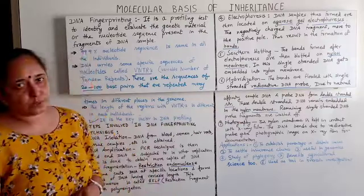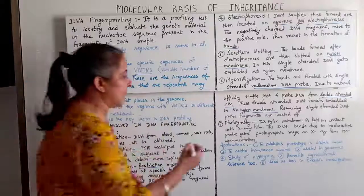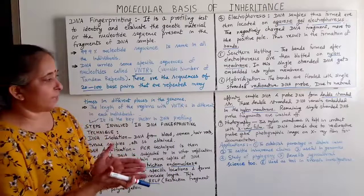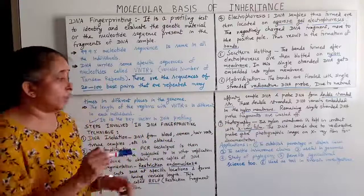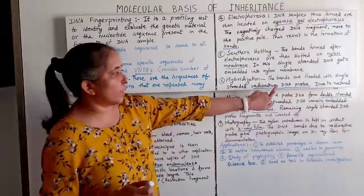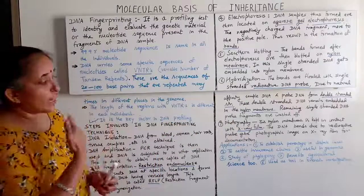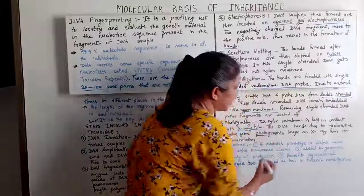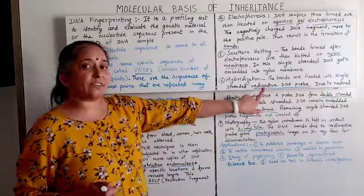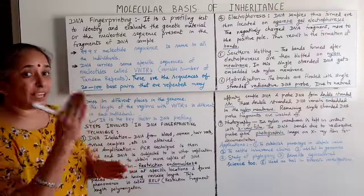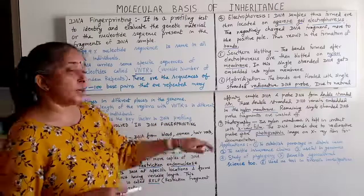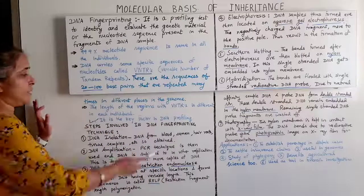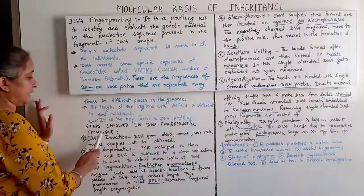Seventh, photographing: the nylon membrane is kept in contact with an X-ray film. Due to the radioactive DNA probe, the DNA bands give a photographic image on the X-ray film for documentation. These are all the steps involved in the DNA fingerprinting technique.